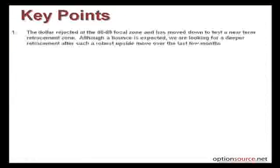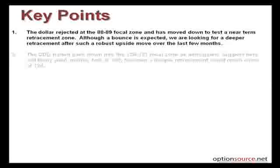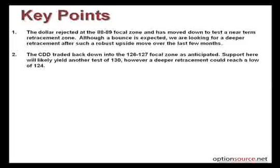Let's review our key points. The dollar rejected at the 88-89 focal zone and has now moved down to test a near-term retracement zone. Although a bounce is expected, we are looking for a deeper retracement after such a robust upside move over the last few months. The CDD — the U.S. versus the Canadian dollar — traded back down into that 126-127 focal zone as anticipated, and support here will likely yield another test of 130.